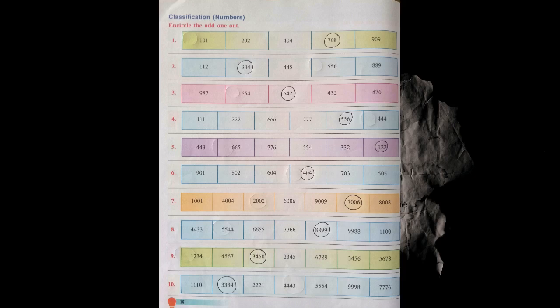In question seven, 7006 is the odd one because in all other numbers the thousands place and ones place digits are the same, except 7006. In question eight, 8 9 9 is the odd one because all other numbers are in backward consecutive form — like 4 3, 5 4, 6 5, 7 6 — but 8 9 9 is in regular forward form where 8 is followed by 9, making it the odd one.